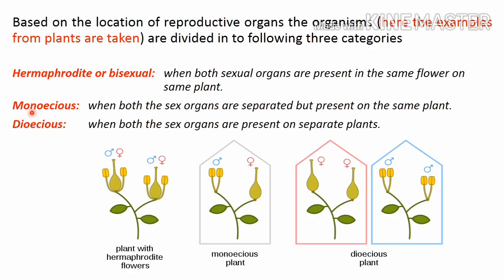Another category is monoecious, a term generally used for plants — when both sex organs are separated but present on the same plant. As we can see here, in this monoecious plant the male flower and female flower are segregated: two different types of flowers are present, both male and female, but located on the same plant. In case of animals, the hermaphrodite and monoecious conditions are the same.